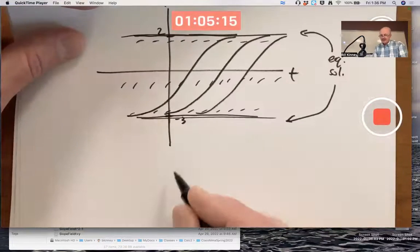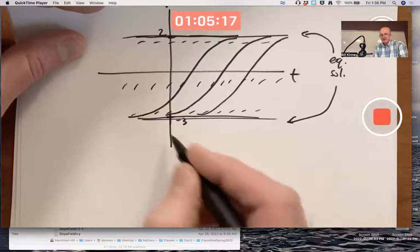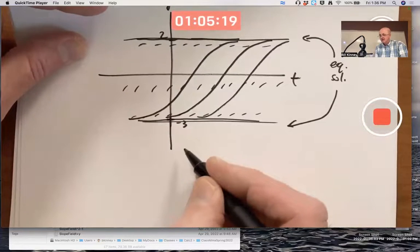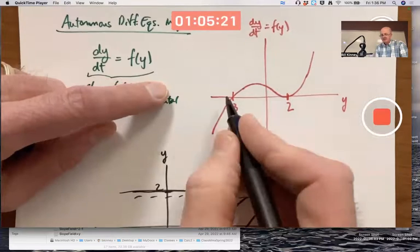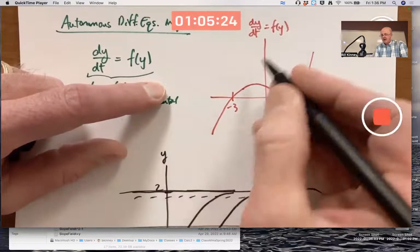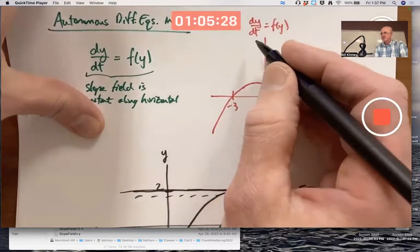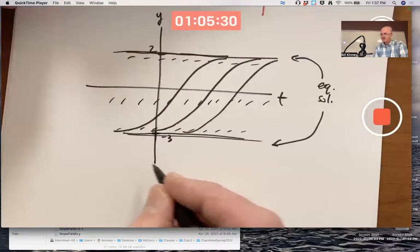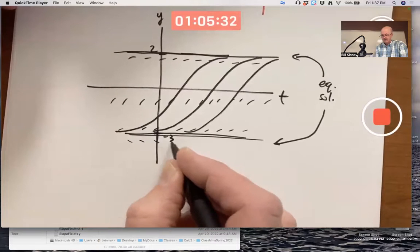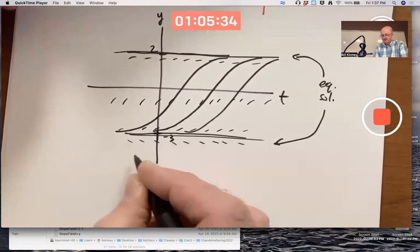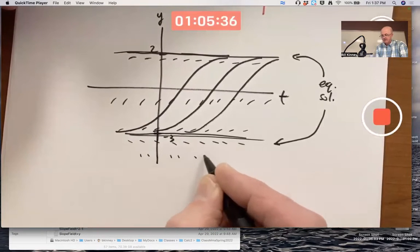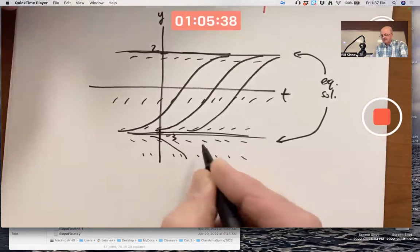When y is less than negative 3, down here in this picture, in this picture that means you're to the left of negative 3, and the output of the right-hand side function is negative, meaning slopes of solutions are negative. You've got to draw negative slopes down here, fairly close to zero when you're close to negative 3, but steeper when you're further away. And your solutions look like that.